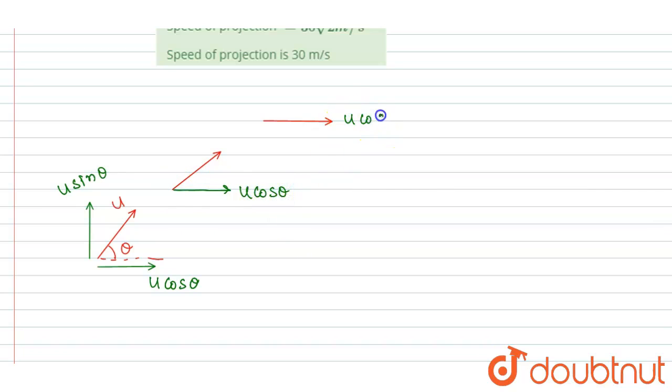U sin theta, right. So what will happen? The u cos theta will remain constant throughout, here also, here also. But at any time t, if I say the vertical component, it will be v_y. I will write v_y equals u_y plus a_y into t.